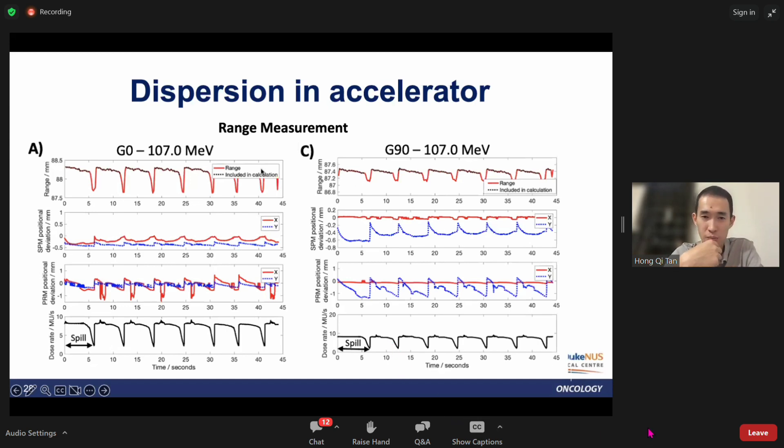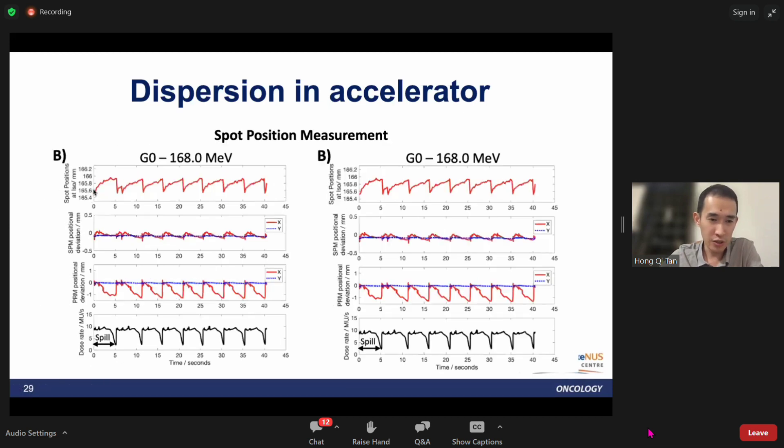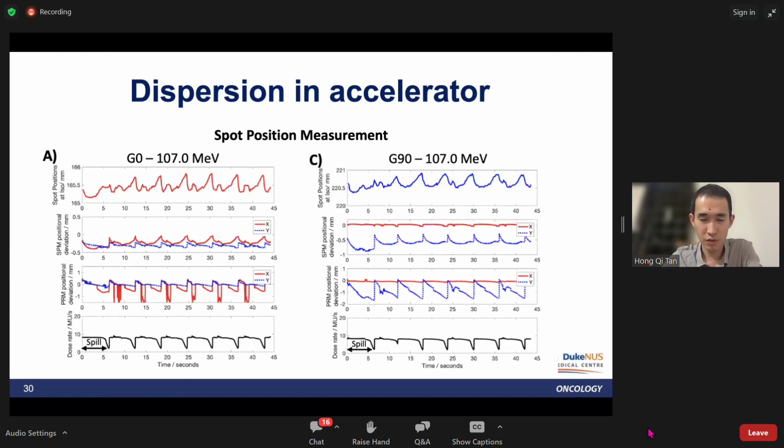For spot position measurements, the spot position at the ISO center is shown in the top plot. From here, you can see that sometimes the spot position deviation will go in the opposite direction to the spot position deviation in the SPM and PRM. This is because if the dispersion has a zero crossing between the SPM and the ISO center, the spot drift will drift in opposite directions. This is due to a zero crossing, and we have very similar measures in the spot position deviation.